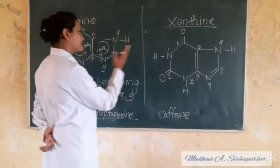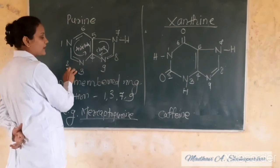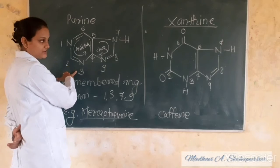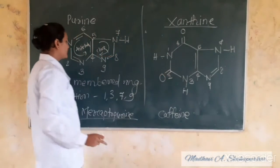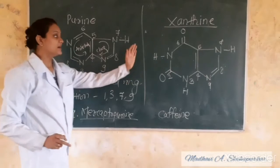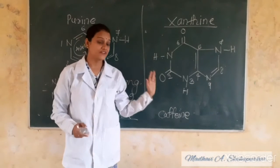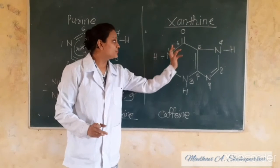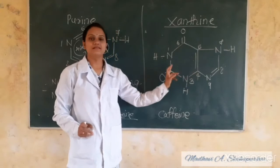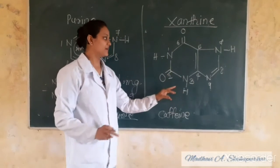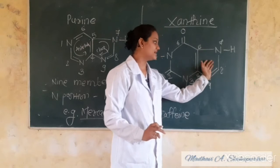We are going to number the ring: 1, 2, 3, 4, 5, 6, 7, 8, 9. At positions 2, 4, 6, in the 3rd position we both have a double bond. We are going to assign positions 2, 4, 6 — then we will have a double bond.